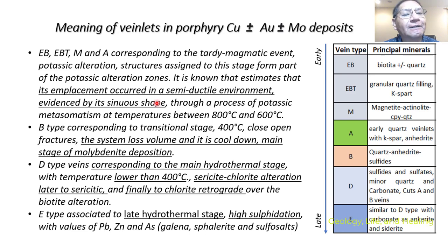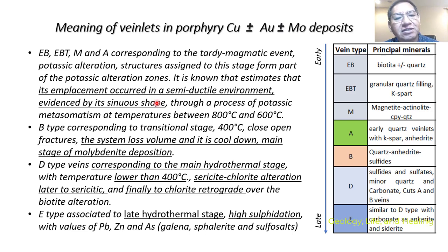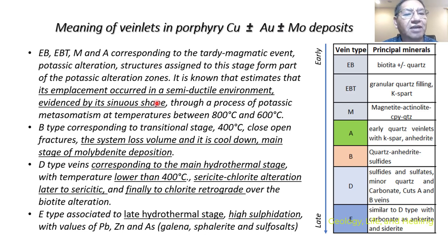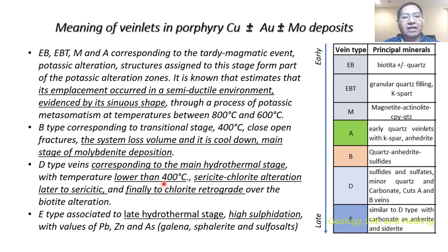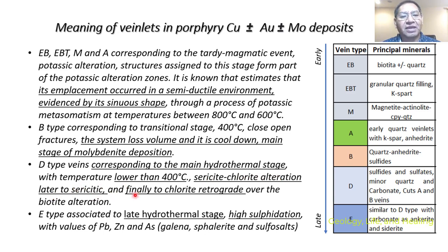B type — B like in boy — corresponds to the transitional stage at around 400 degrees Celsius. The system loses volume, it cools down, with open fractures. This is the main stage for molybdenite deposition — very important, this B type. D type — D like in Dave — corresponds to the main hydrothermal stage with temperatures lower than 400 degrees Celsius, with sericite-chlorite alteration assemblage, and later sericitic alteration. Finally, chlorite retrograde overprints biotite alteration, meaning biotite will alter to chlorite, which will cut the B-type and A-type veinlets.